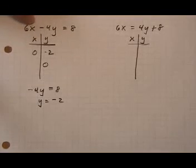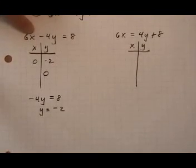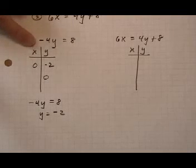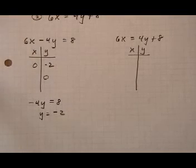All right, so when x is 0, so imagine putting in the 0 term right there, 6 times 0 is 0, it goes away, then we get y equals negative 2. That's the y-intercept.